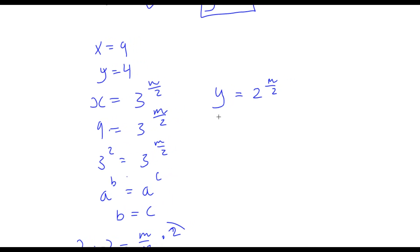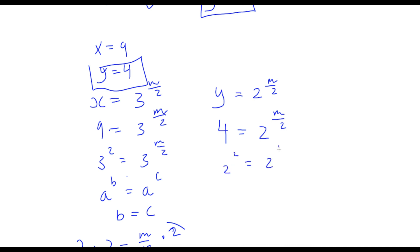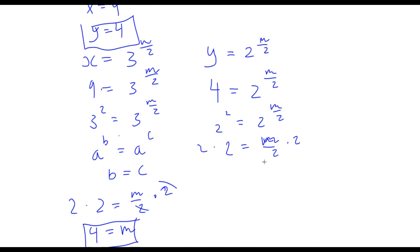Now let's verify with the second equation. We have y equals 2 to the power of m over 2, and y equals 4, so 4 equals 2 to the power of m over 2. Since 4 is the same as 2 squared, we have 2 squared equals 2 to the power of m over 2. Because the bases are equal, 2 equals m over 2. Multiplying both sides by 2, we again get m equals 4.